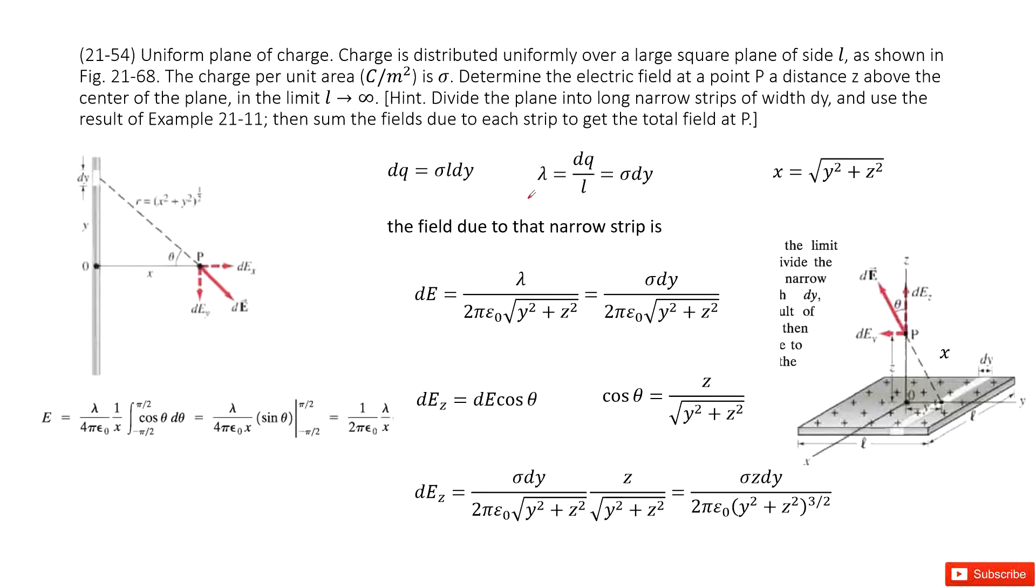Chapter 21 is about electric charge and electric field. We need to determine the electric field at point P, a distance z above the uniform plane of charge. This position P is with a distance z above the center of the plane.